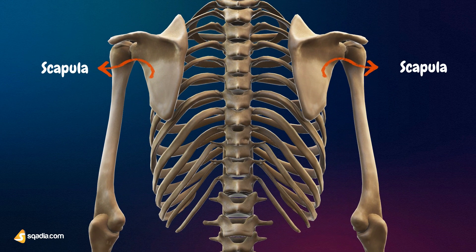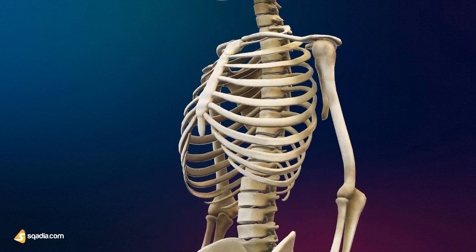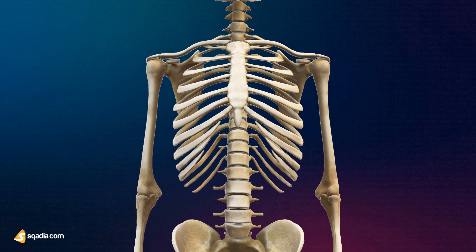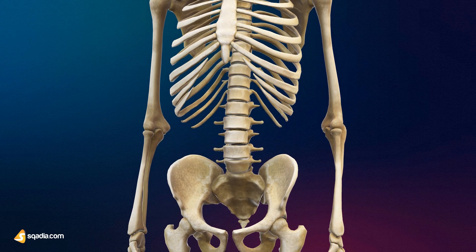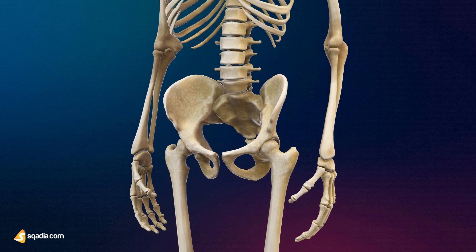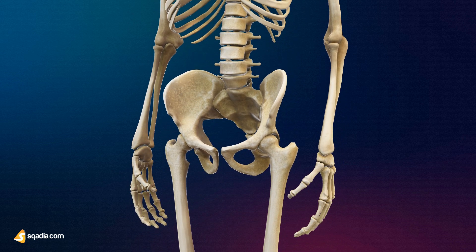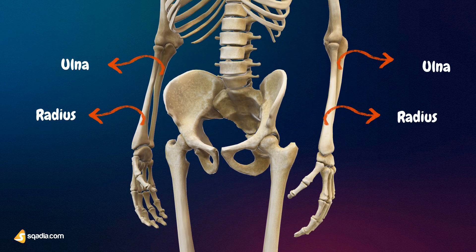Then there's the arm, which only has one bone. Called the humerus, it is the largest bone of the upper limb. Then we have the forearm, which has two bones called the radius and the ulna.